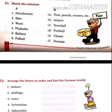Under Schreibwaren comes pencil and similar stationery items. 'Käse' means cheese, 'Wurst' means sausages, 'Flughafen' means airport, 'Rathaus' means town hall, 'Fußball' means football. In exercise two, you have to arrange the jumbled letters — arrange the jumbled words related to what we have learned.